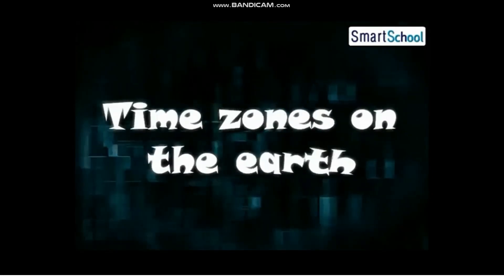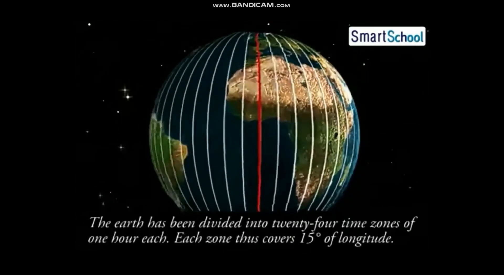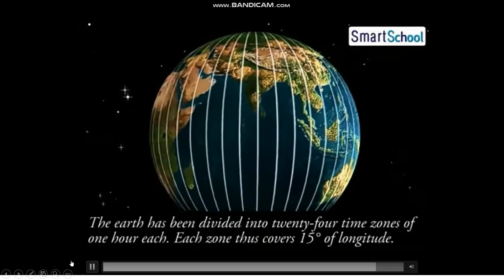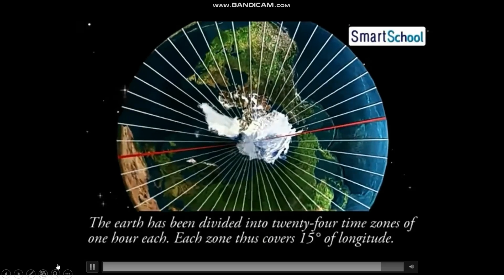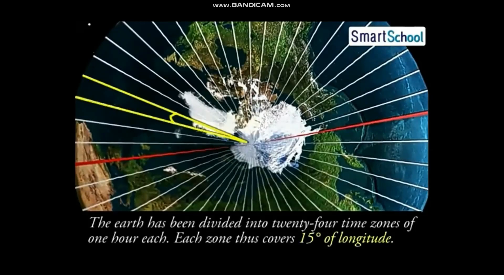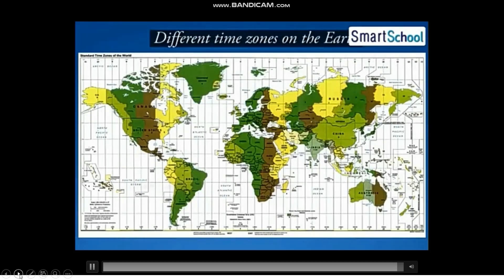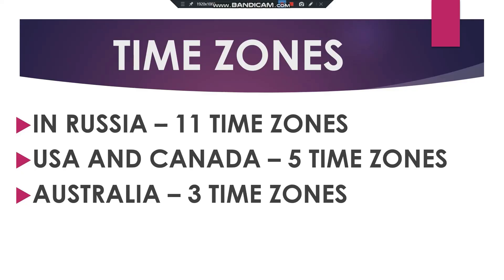Now let's move on to time zones on the Earth. The Earth has been divided into 24 time zones of one hour each, and each zone covers 15 degrees of longitude. Looking at the map, you can see the different time zones. Russia has 11 time zones, USA and Canada have five time zones, and Australia has three time zones.